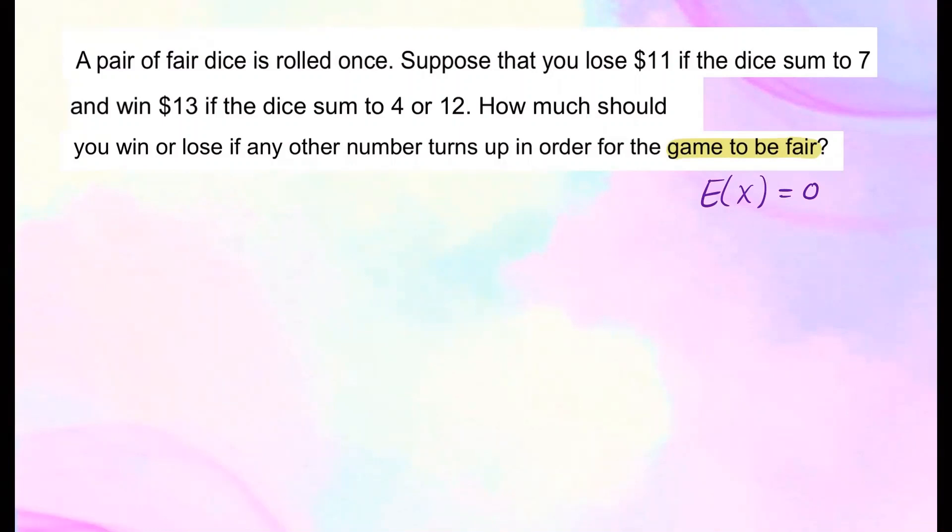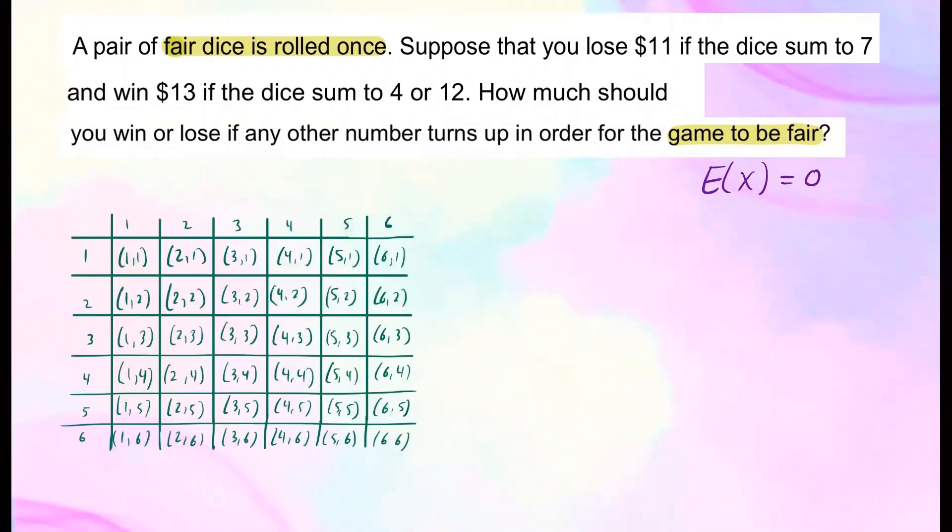So we're working with this experiment. Two dice are rolled. So we know our sample space consists of 36 outcomes. So you can either get 1-1 or 1-2, 1-3, and so on. So let me show you the sample space. Here I have all possible outcomes for you. Either you can get a 1 on the first die or 1 on the second or 2 on the first, 1 on the second, and so forth.